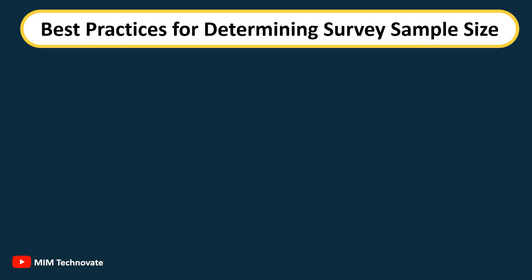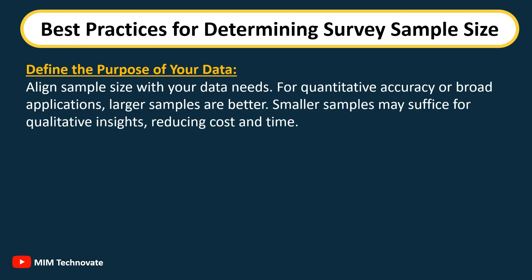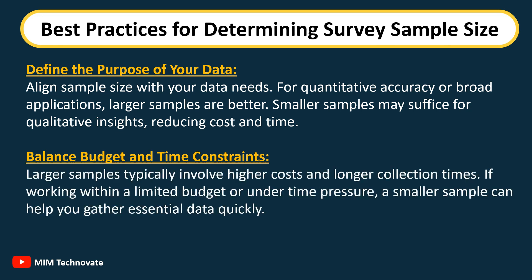To optimize your sample size for accurate and efficient survey results, consider these tips. Define the purpose of your data and align sample size with your data needs. For quantitative accuracy or broad applications, larger samples are better. Smaller samples may suffice for qualitative insights, reducing cost and time. Balance budget and time constraints — larger samples typically involve higher costs and longer collection times. If working within a limited budget or under time pressure, a smaller sample can help you gather essential data quickly.